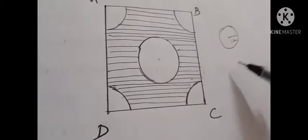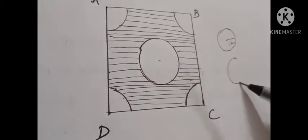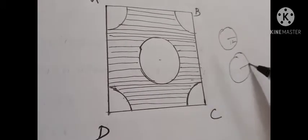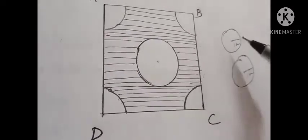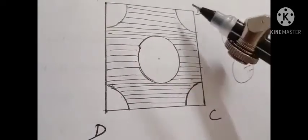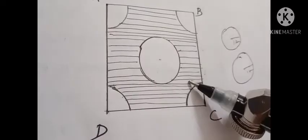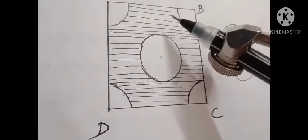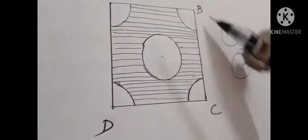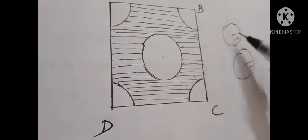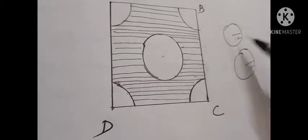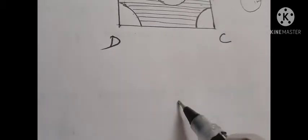The circle with diameter 2 cm has radius 1 cm. So in total, what we cut is two circles each with radius 1 cm. The area of the remaining portion equals the area of the square minus the area of these two circles.